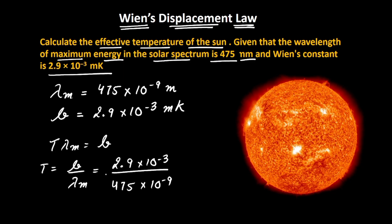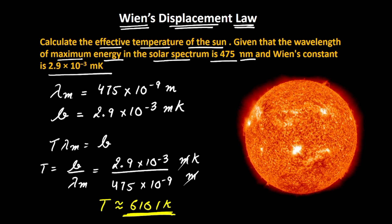Writing the units: this is meter Kelvin divided by meters, so the meters cancel and the answer is in Kelvin. After solving this, we get the temperature nearly equal to 6101 Kelvin. So, with the help of Wien's Displacement Law, we have now found out the temperature on the surface of the Sun.